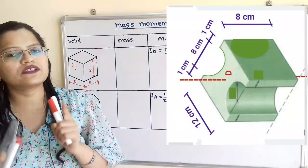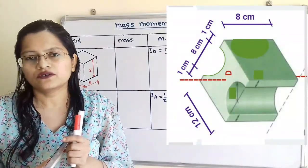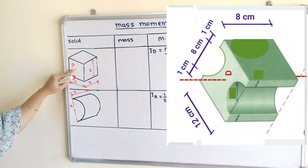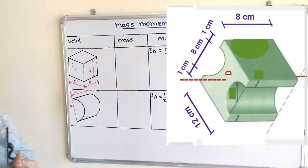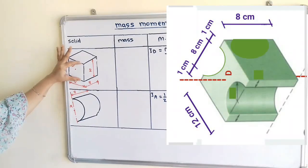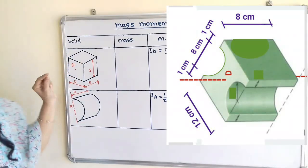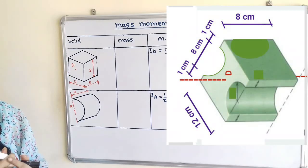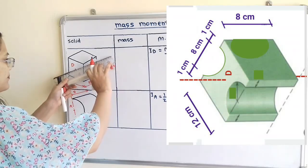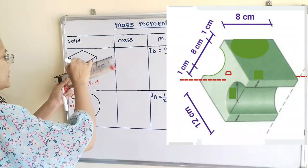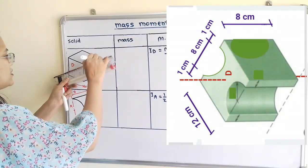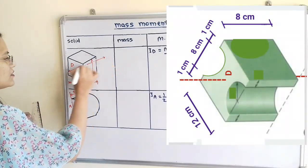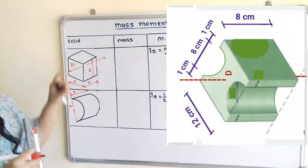We will take the first shape, that is the solid block. We will show here the three-dimensional diagram, and this point D is the center point for the base 12 and for this height 10. This is known as the centroid, and we will show the axis passing through the point D in the form of dash and dot. We have to find out mass moment of inertia about this axis for this solid block.